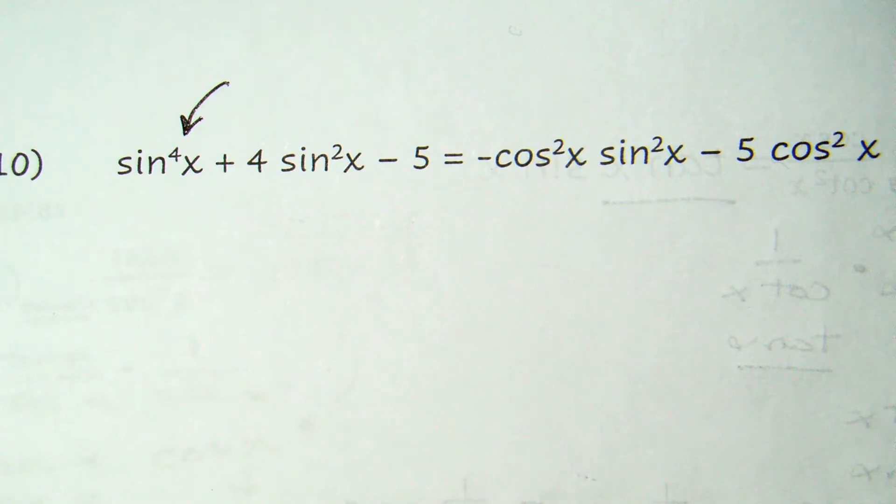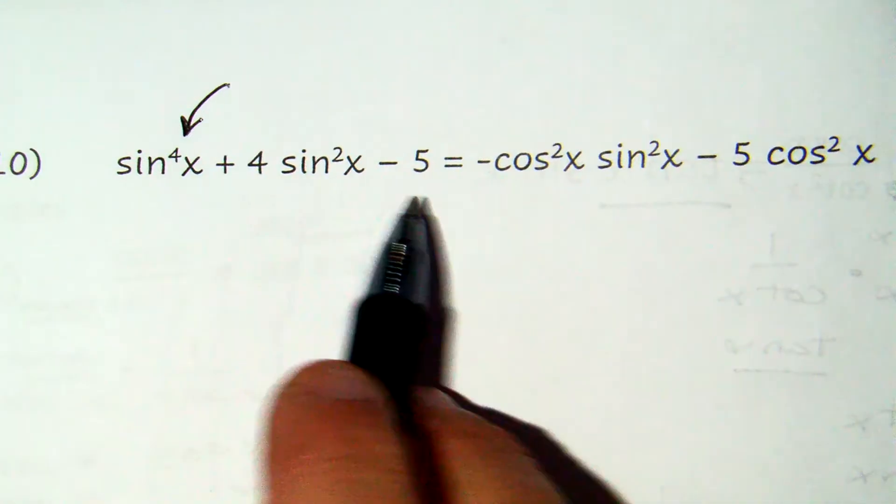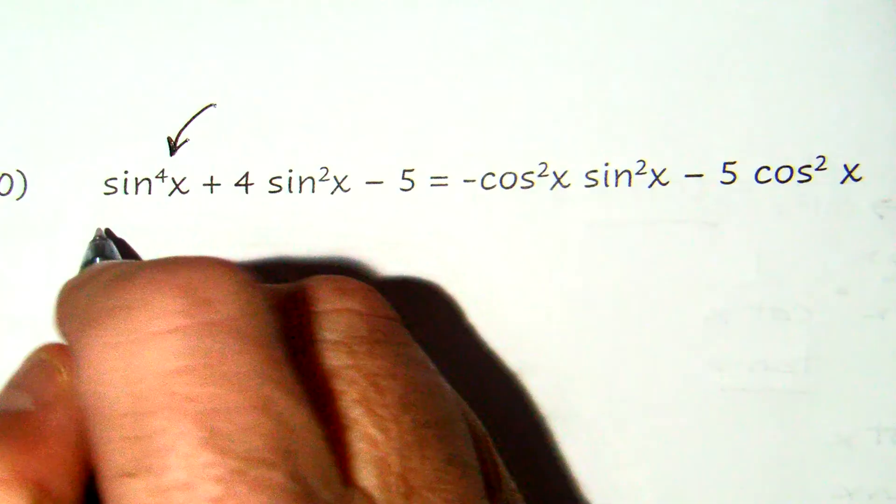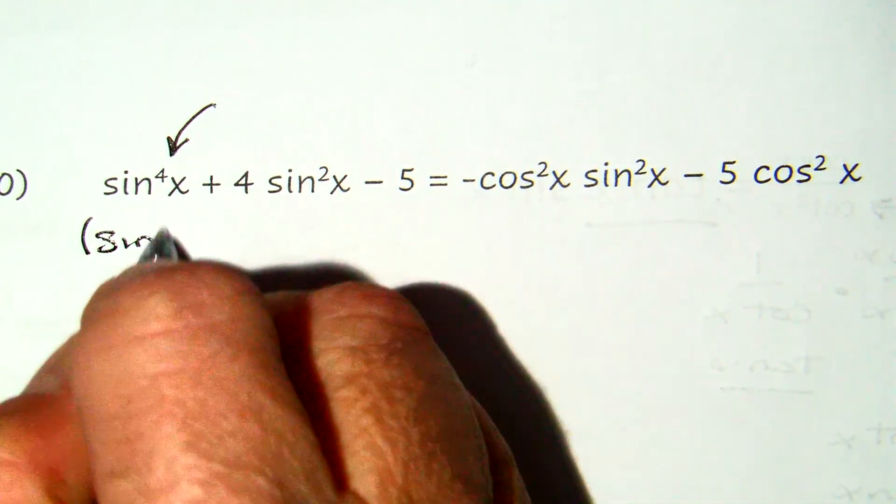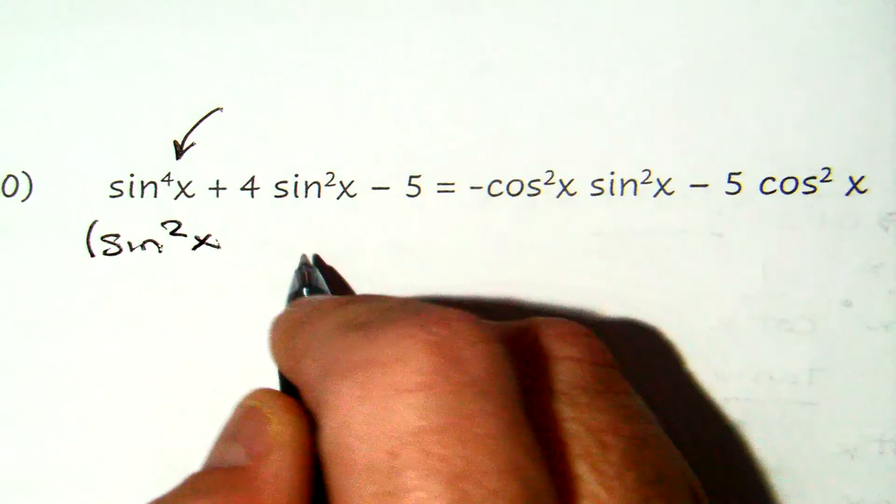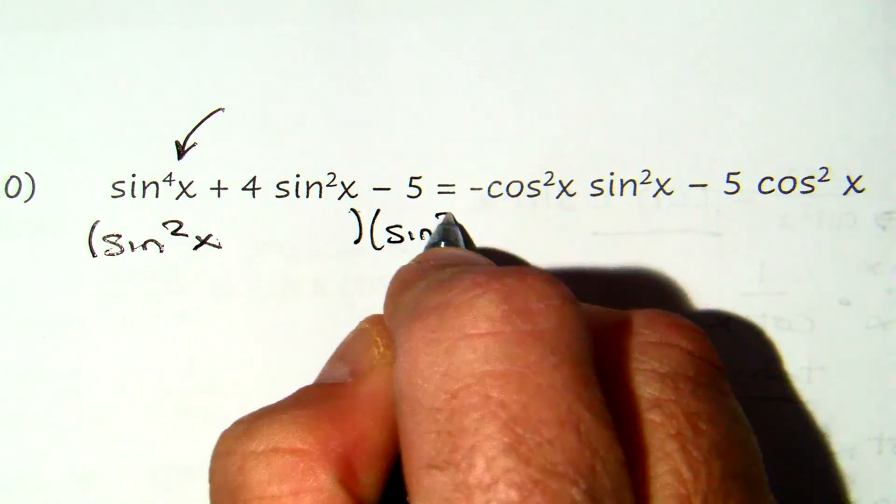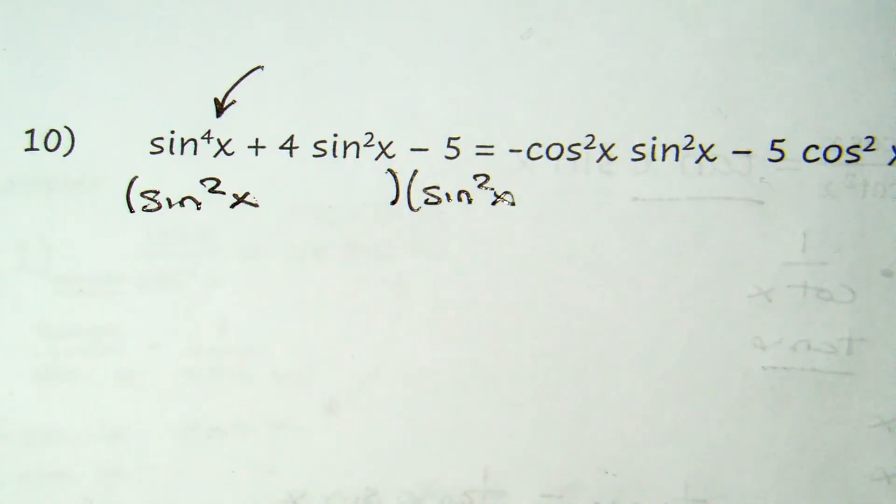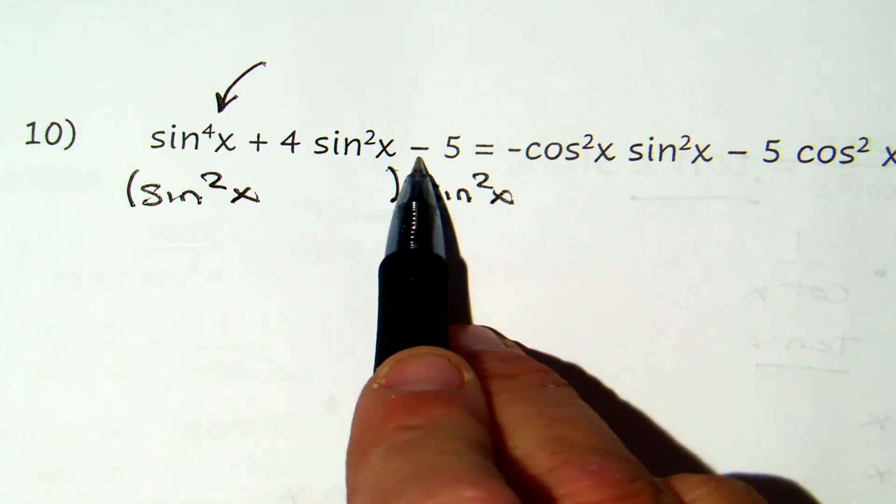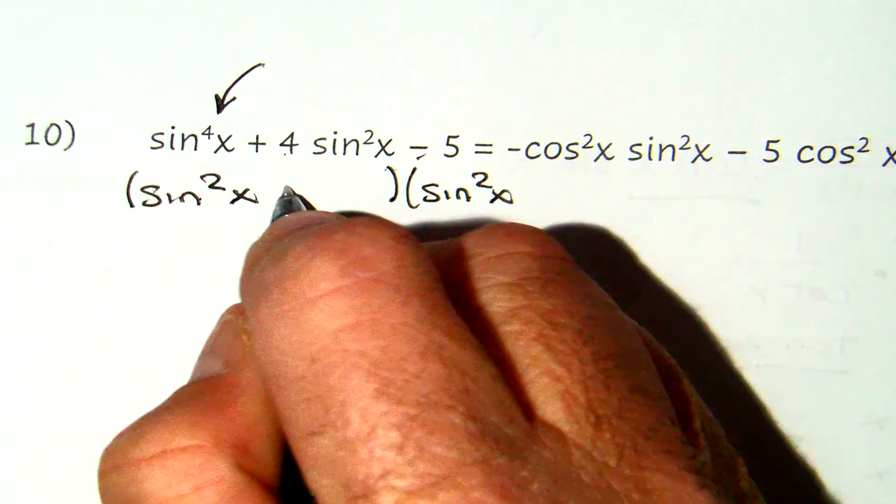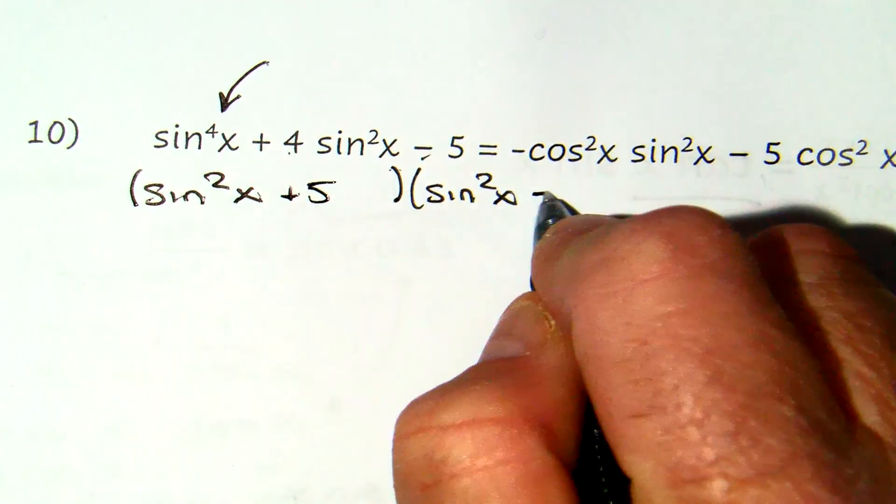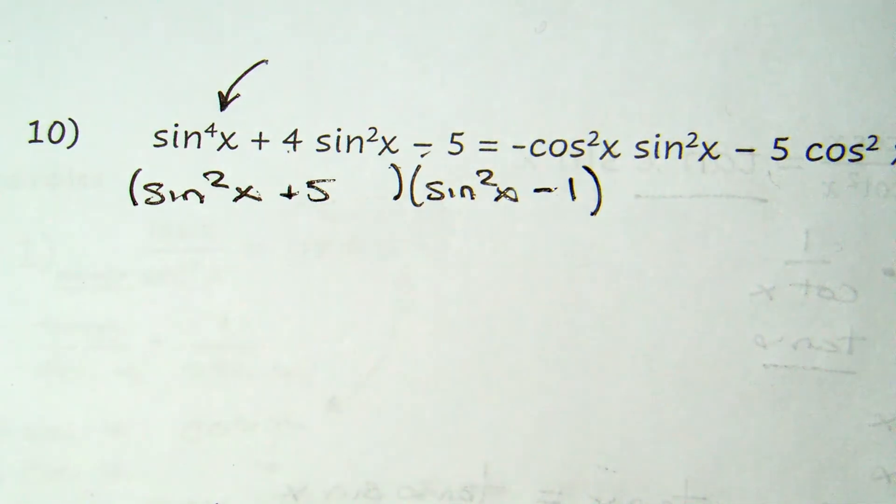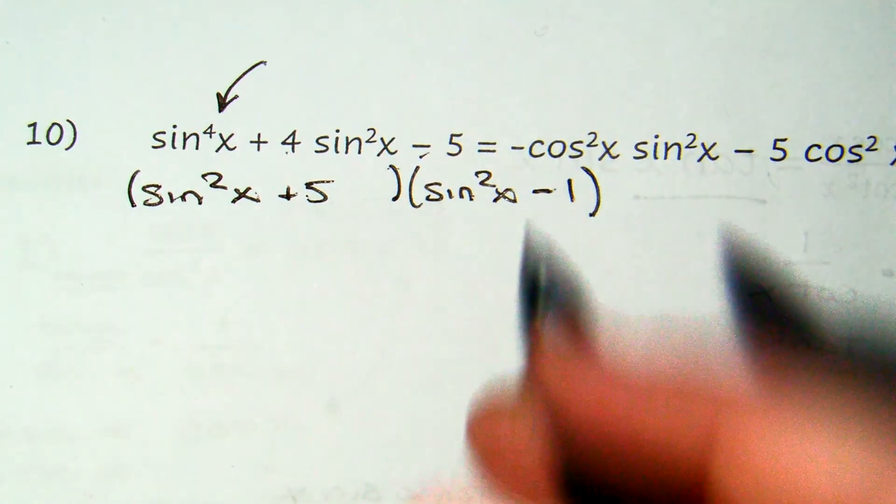The difference is it factors into sin²x and sin²x. Other than that, it's exactly the same. The two numbers that multiply to negative five that add up to four: plus five and negative one.